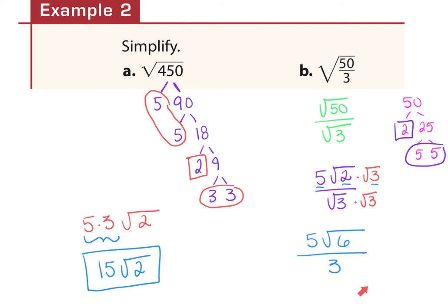You can only reduce outside to outside or inside to inside. I cannot reduce the 3, which is outside of a radical, with the 6, which is inside a radical. I cannot reduce outside and inside. So this one is done — 5√6 over 3 is as simple as you can get. You cannot reduce this anymore.